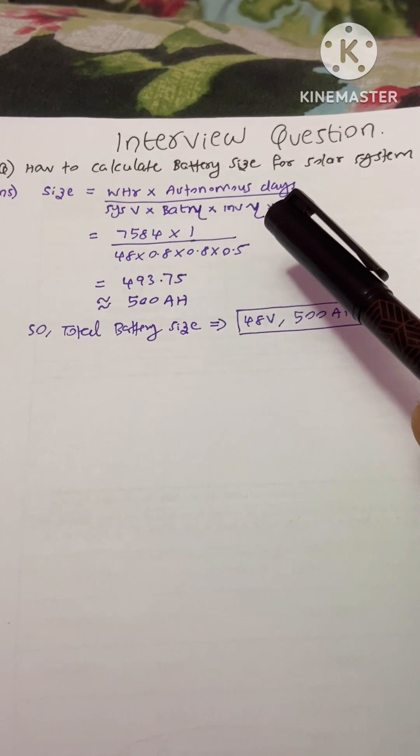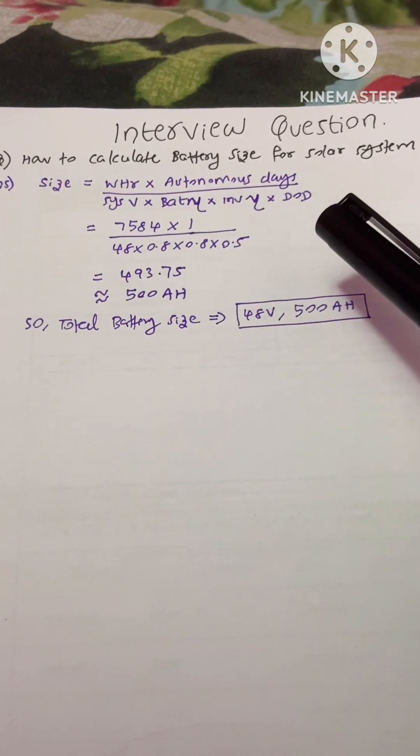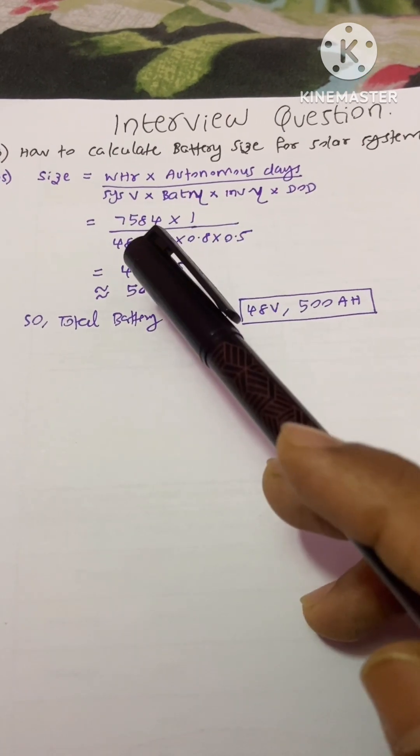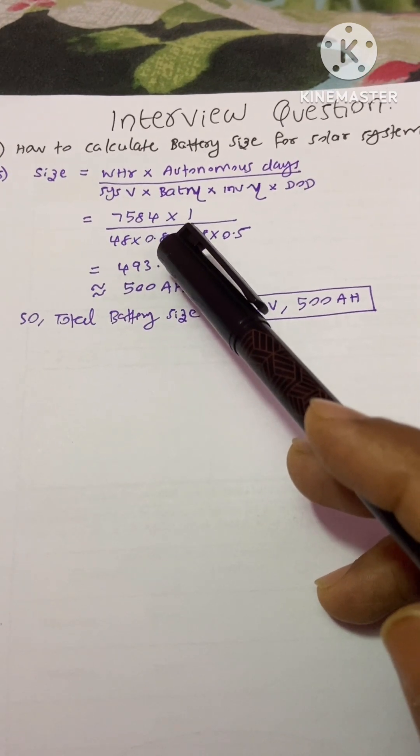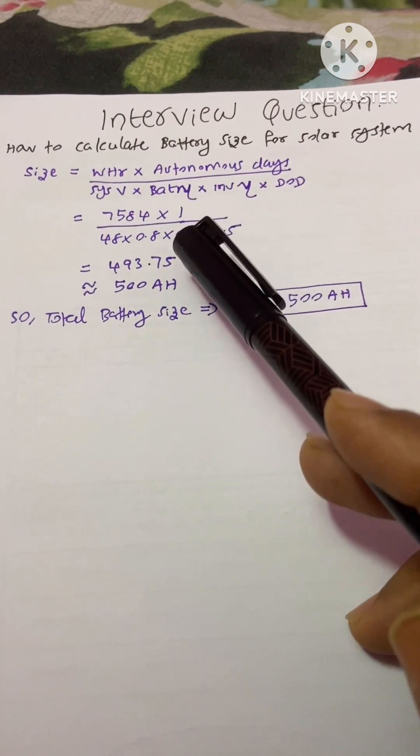Suppose in your country you would get sunlight in whole seven days per week, then you need to put in one. Here our watt hour is 7584, system voltage is 48, and battery efficiency is 80%, that is 0.8.